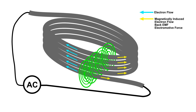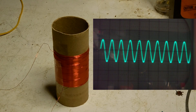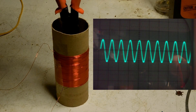Impedance, or AC resistance in a coil, is produced when the magnetic field induces a current in the opposite direction, which resists current flow from the source, or when the magnetic field induces a current with the current from the source, which impedes or resists the collapse of the magnetic field. Thanks for watching.